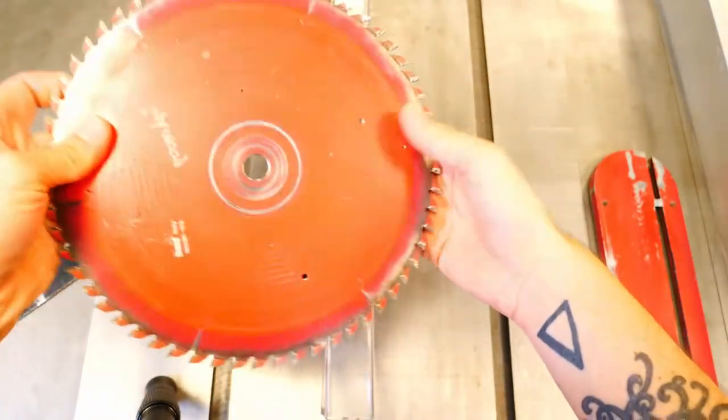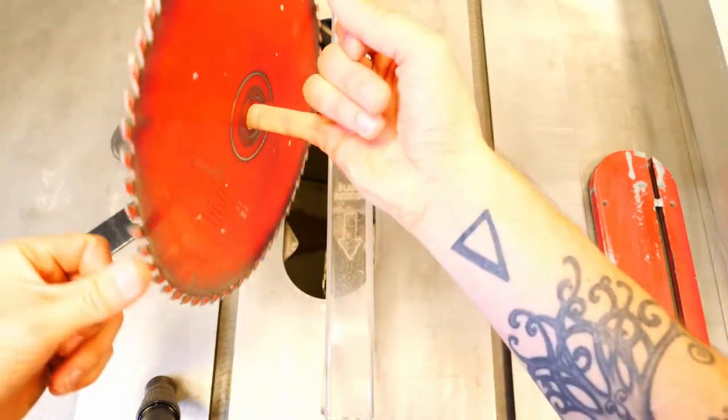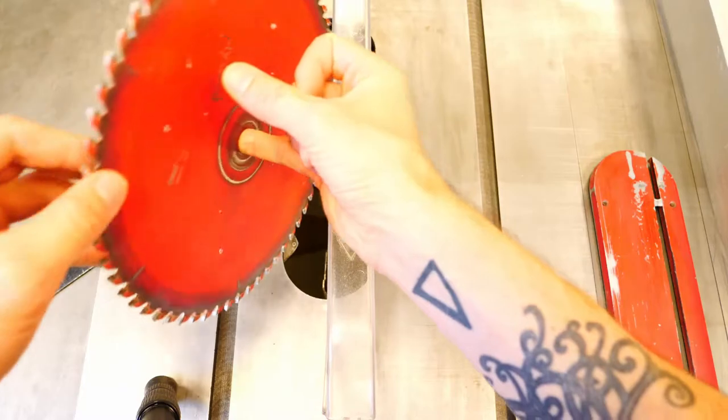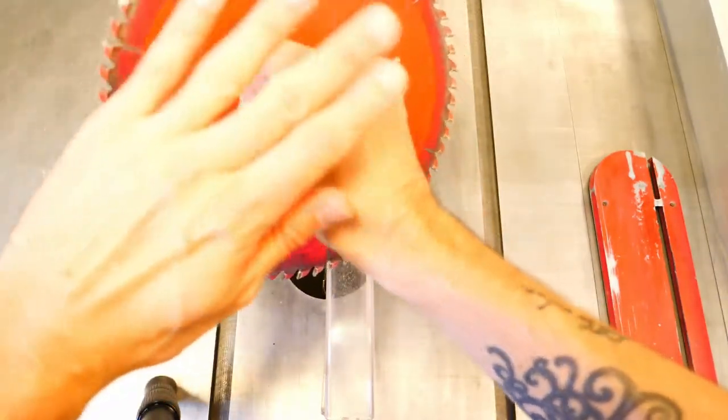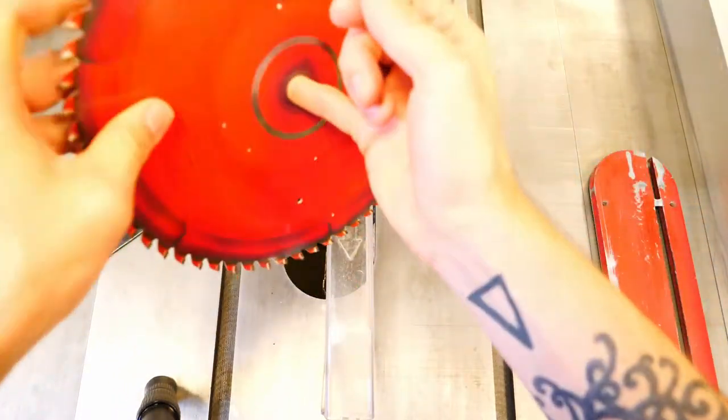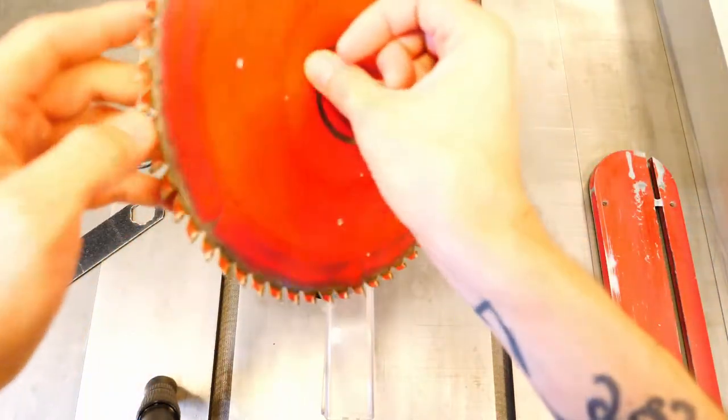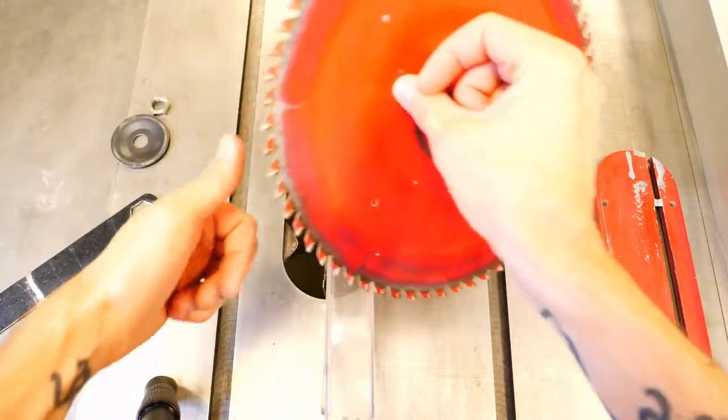So when we're replacing the blade there are two ways we can put it on and one is incorrect. When you place it like this the teeth are backwards. They're facing up which means they're going to rub instead of cut the material. So we want to make sure that the teeth are facing the operator and are pointed downward. That's going to cut the material properly.